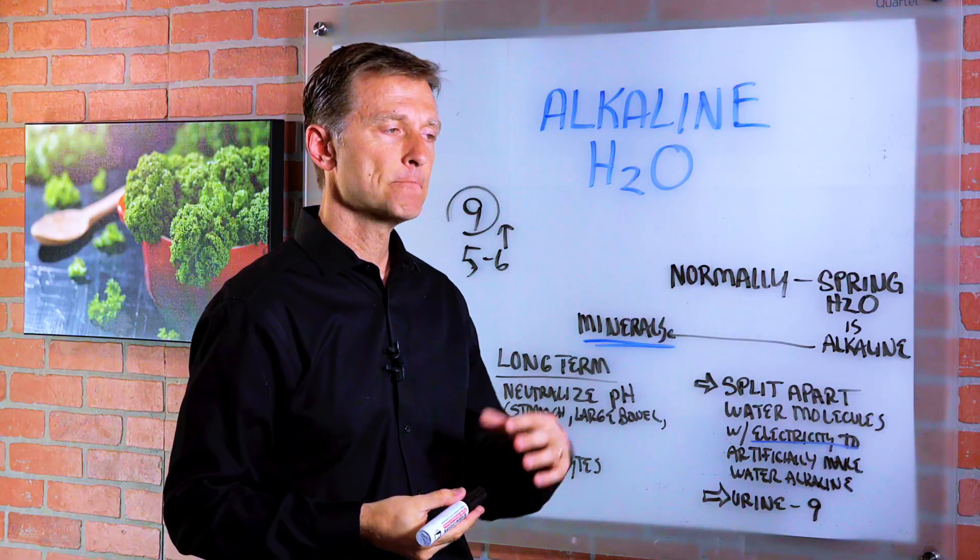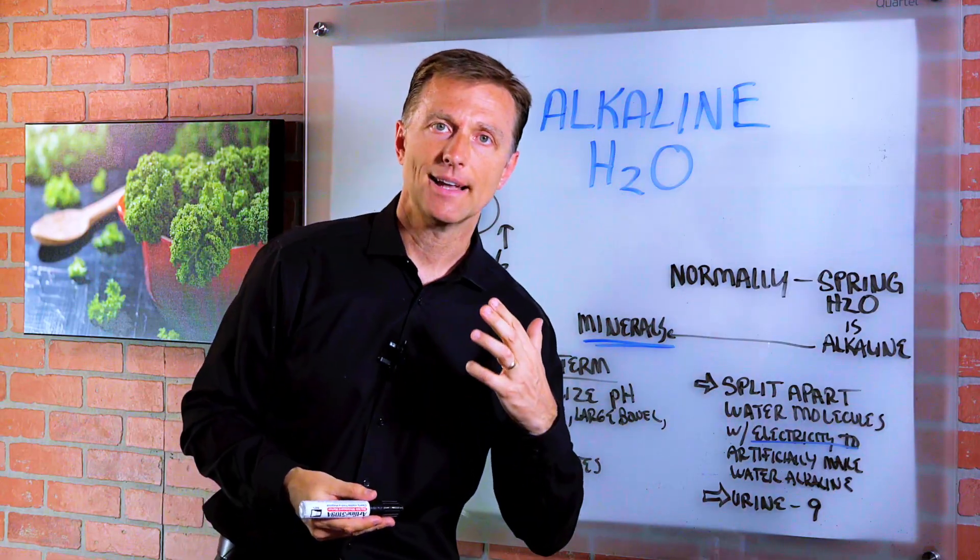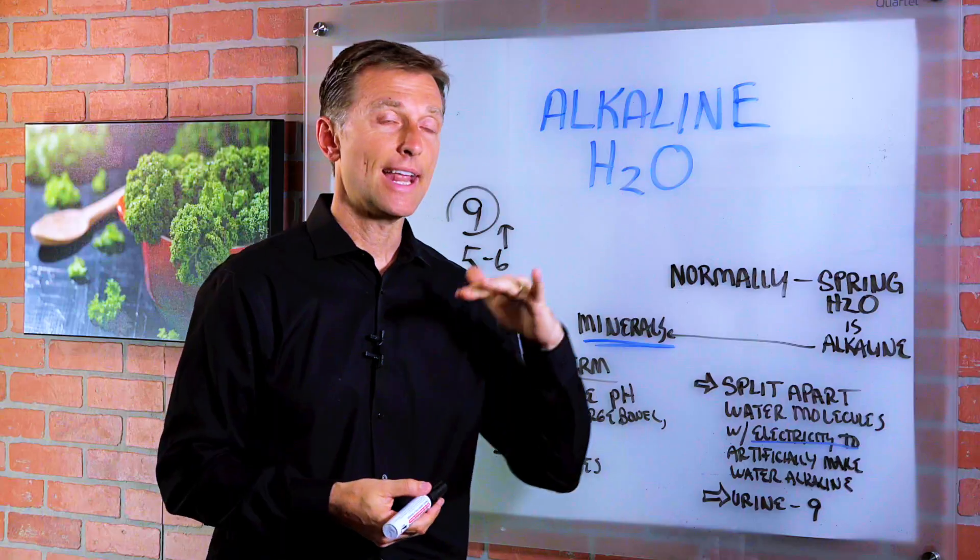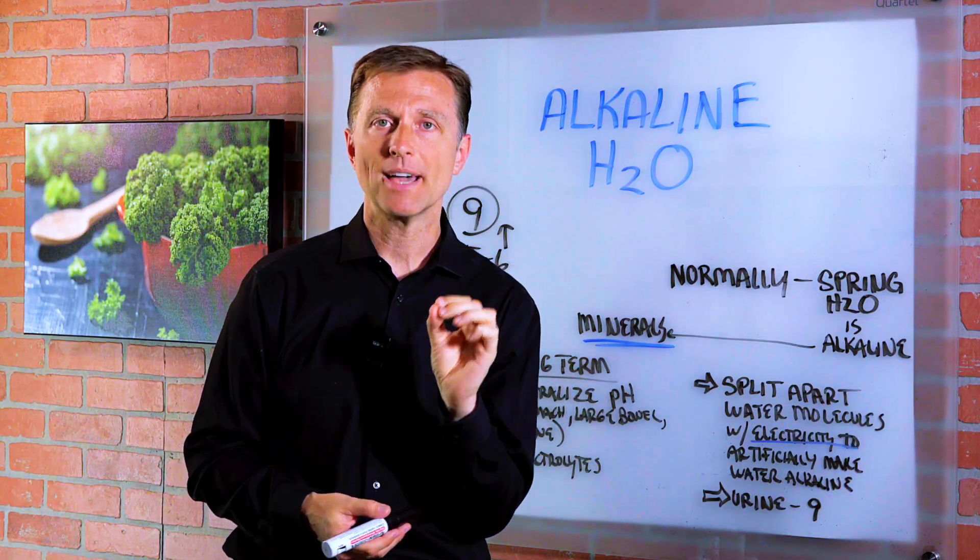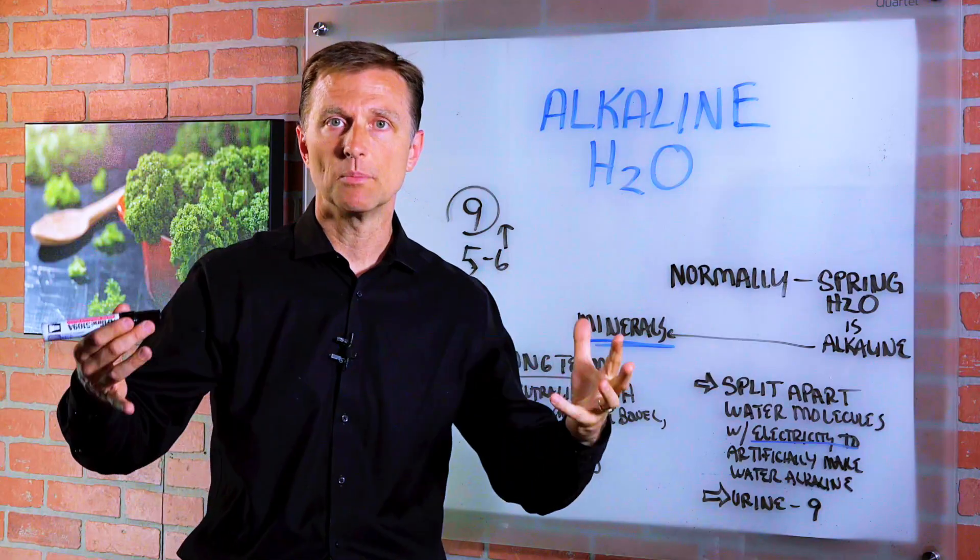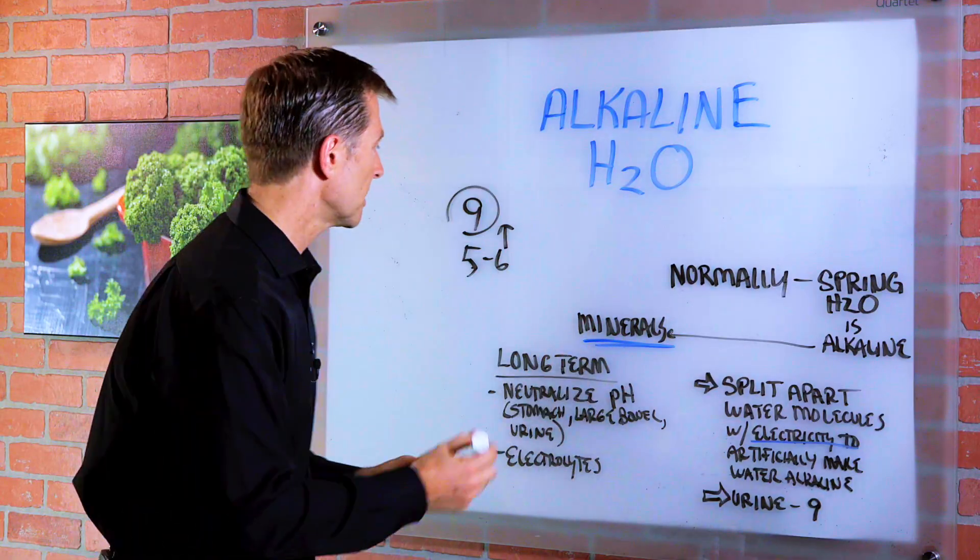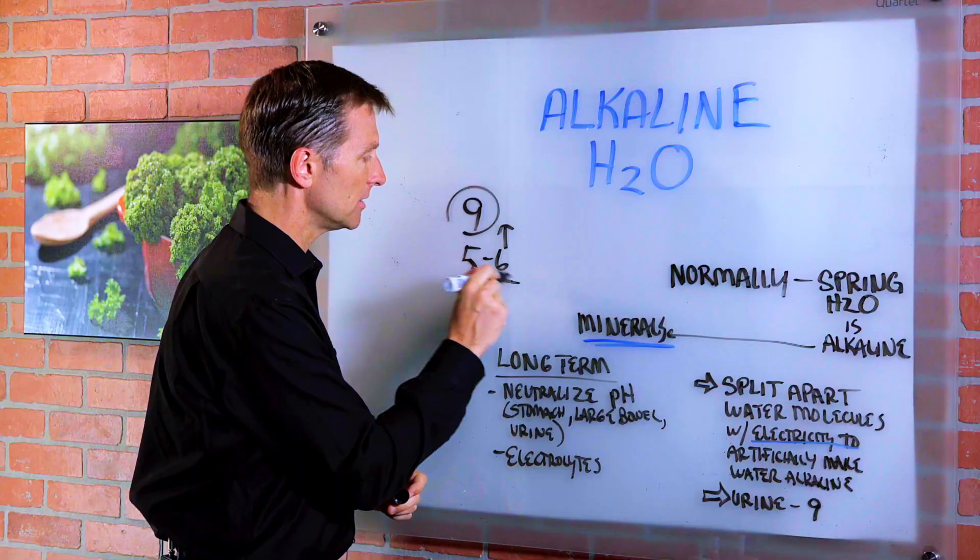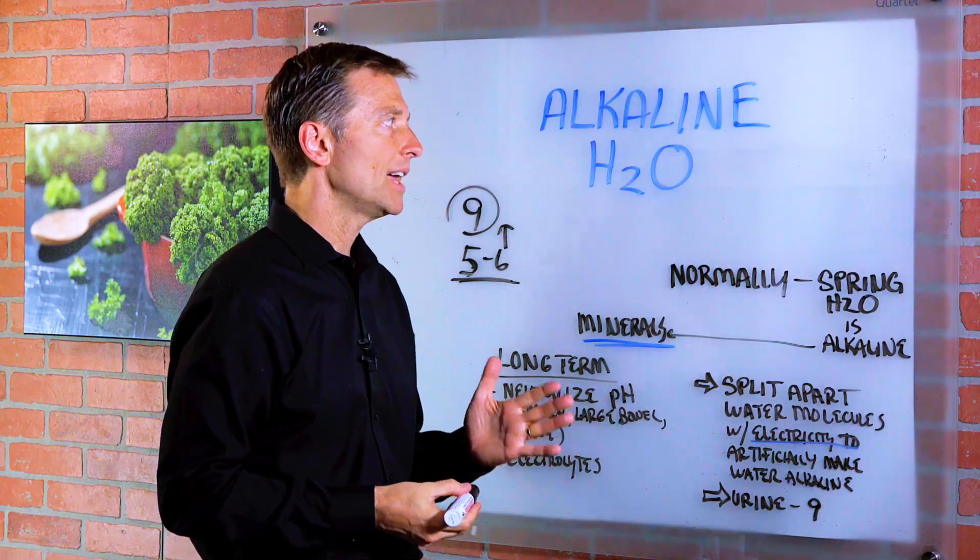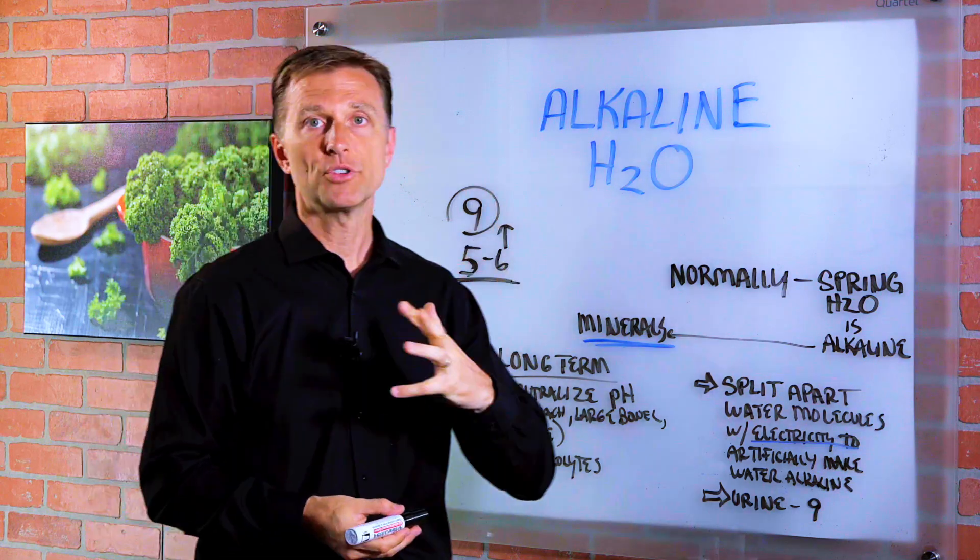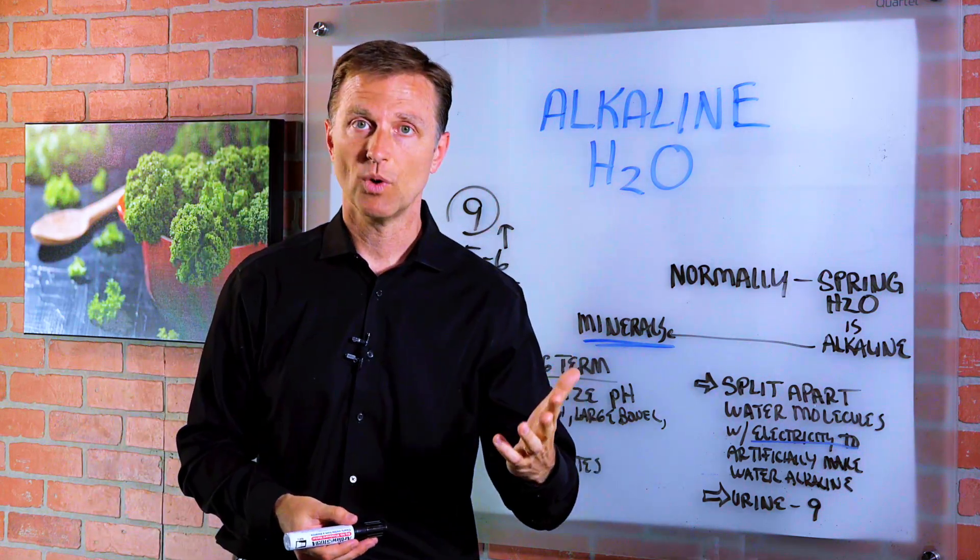The problem with having your urine being that high in a pH, that alkaline, is that you don't have any protection against the microbes. So microbes can grow in the body a lot more. It's one of the purposes of having acidic urine so we can kill off the microbes. So I do know that alkaline water does alter your chemistry in not a good way.